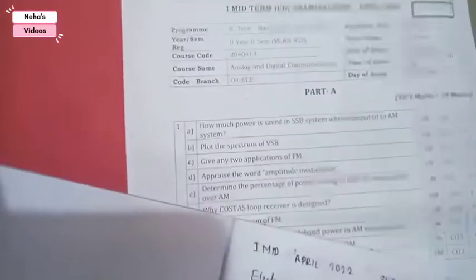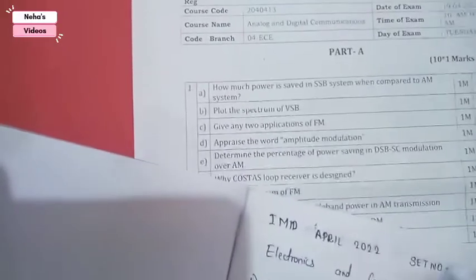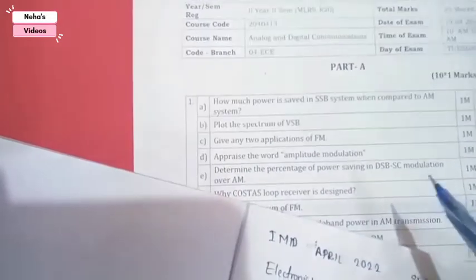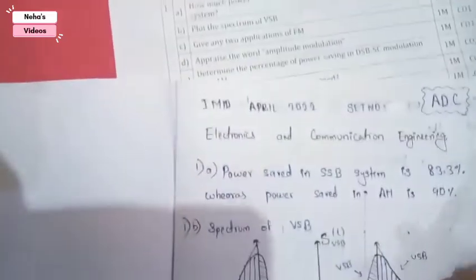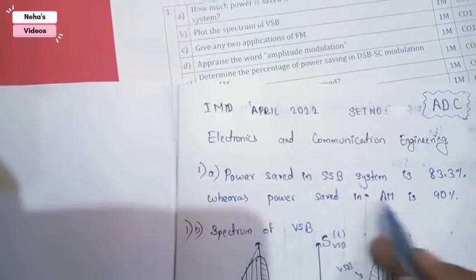The first question asks: how much power is saved in SSB when compared to AM signal? In SSB, 83.3 percent of power is saved, whereas in AM signal 90% of the power is saved during the modulation system.